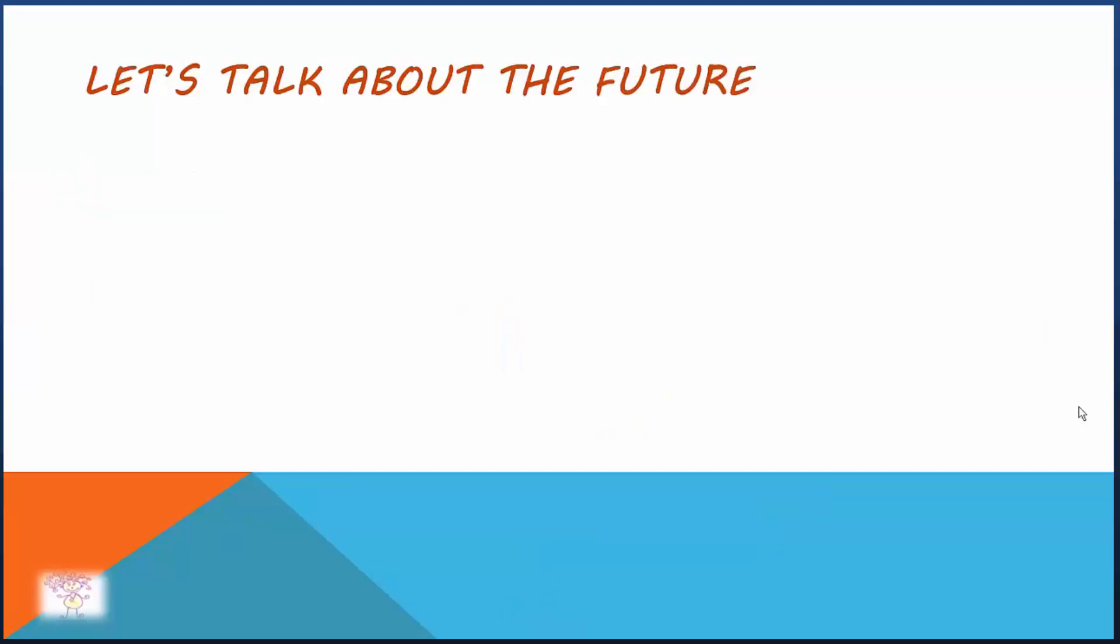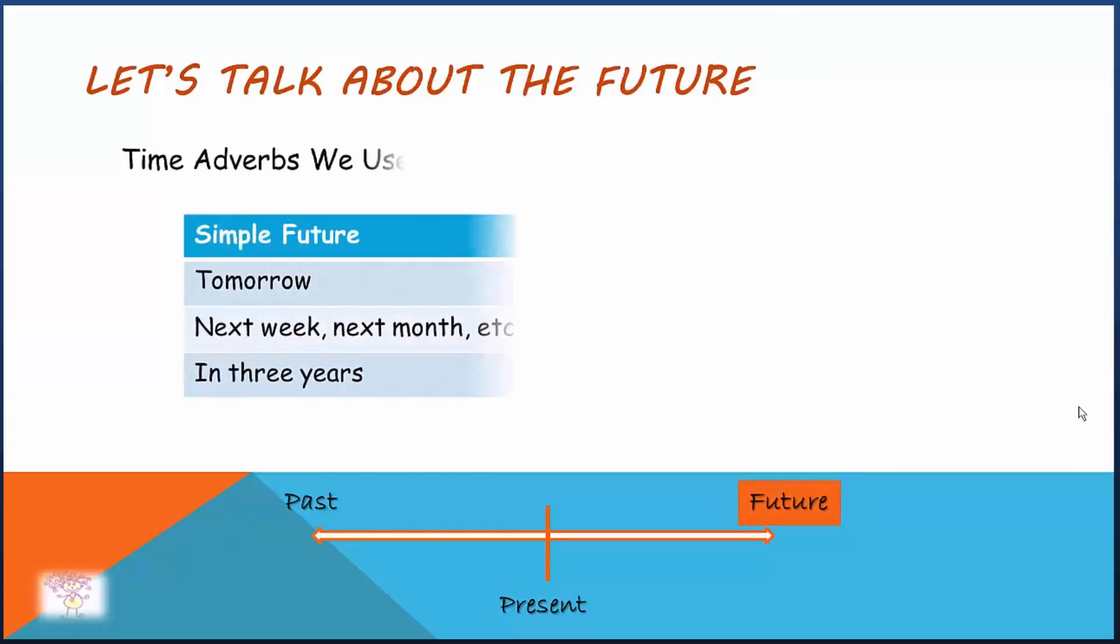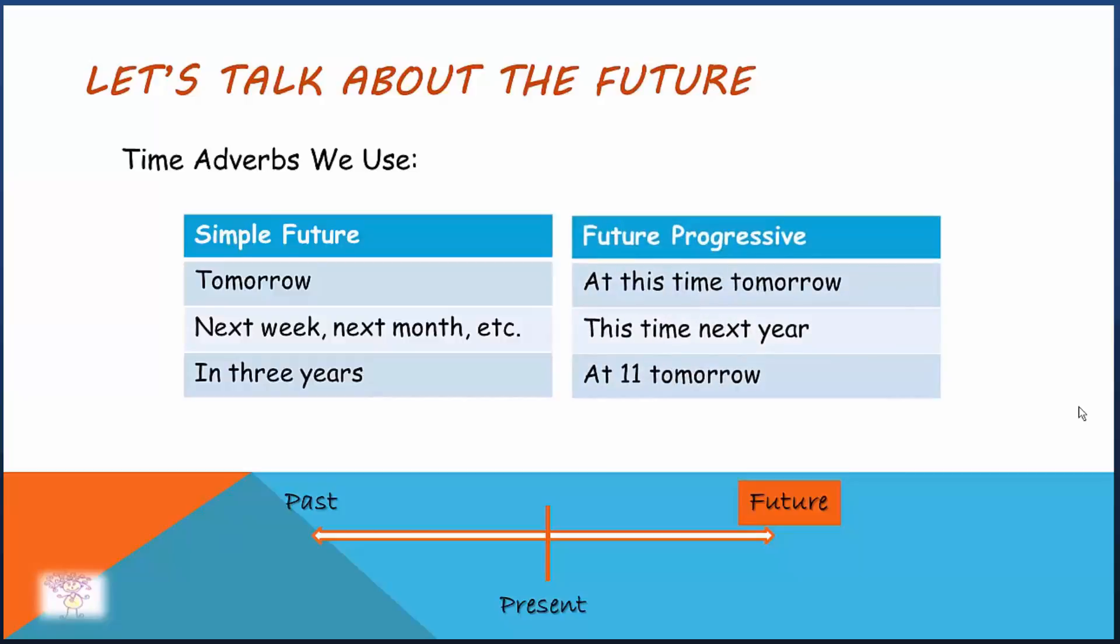Finally, let's take a look at some tenses expressing future actions. The time adverbs we use for simple future are tomorrow, next week, next month, or in three years, etc. We use at this time tomorrow, this time next year, or at 11 tomorrow, etc. to express progressive actions in the future.